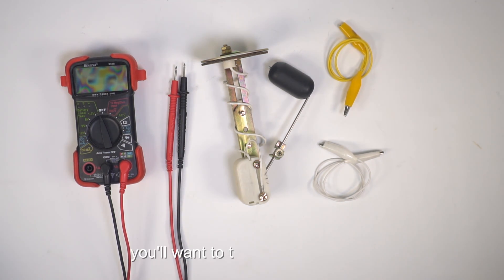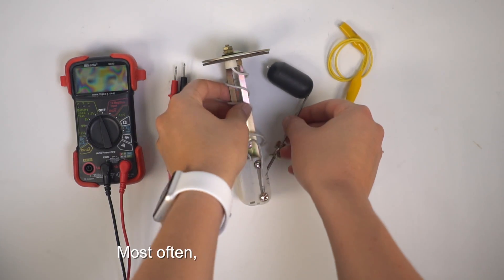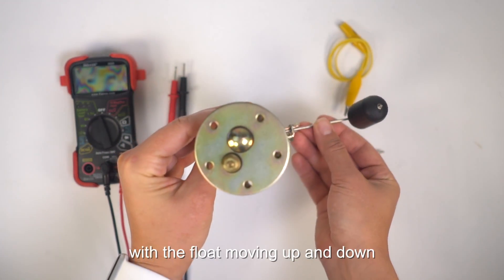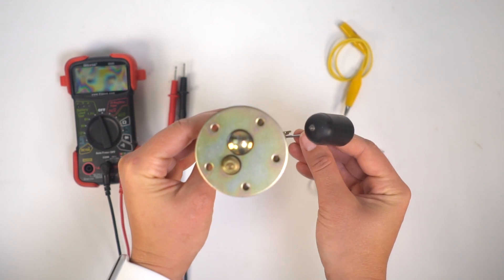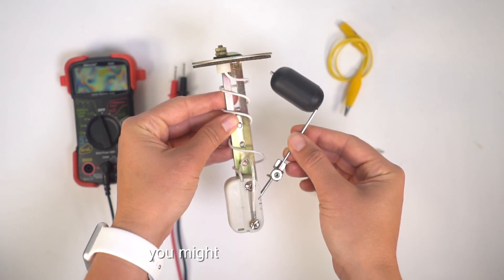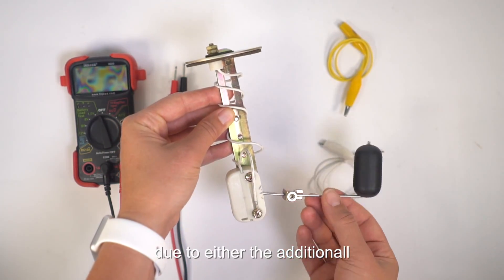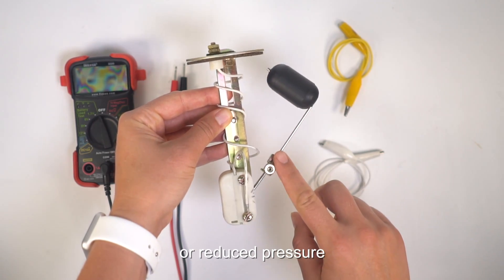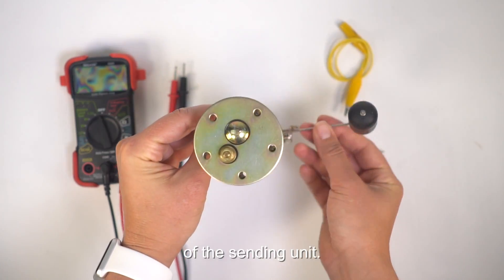Make note that you'll want to test the sending unit in the same position it will be in the tank. Most often they'll be mounted upright, with the float moving up and down with the level of gasoline. If you test it sideways, you might get a false reading due to either the additional or reduced pressure on the resistance strip of the sending unit.